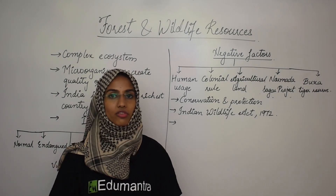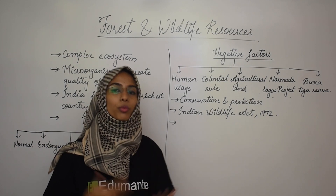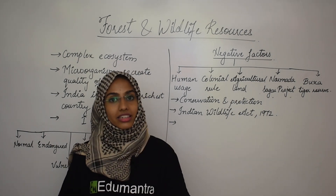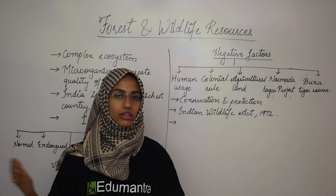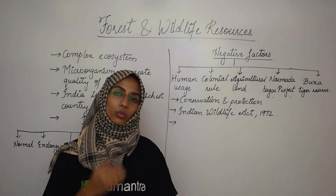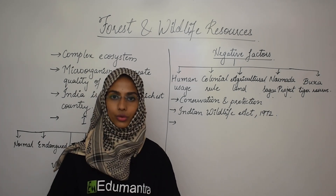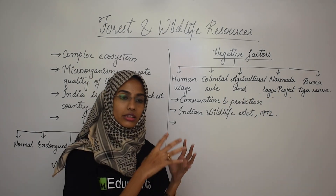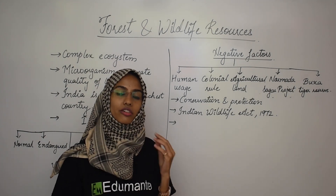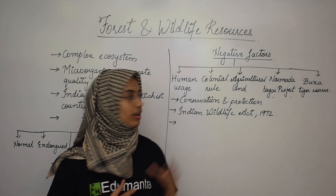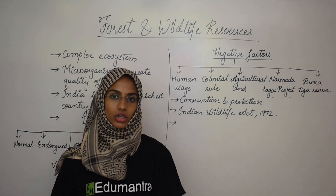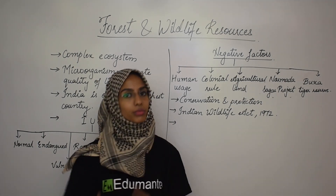The next negative factor is development projects. There are various development projects that come up. For example, the Narmada Sagar project in Madhya Pradesh has used 40,000 acres of forest land. Another example is the Bakra Tiger Reserve. These are the various negative factors that contribute to the extinction of species.